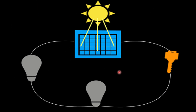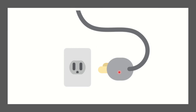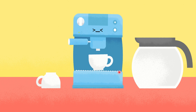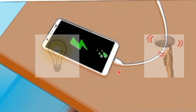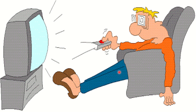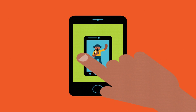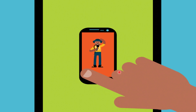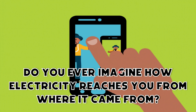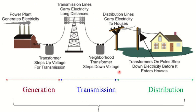Electrical energy is produced from various sources. Electricity is vital to mankind, especially in this modern age. Industries use it to make different products that are beneficial to man. We also enjoy its benefits in our homes through our electrical appliances, gadgets, lights, alarm systems, and others. Electricity has been an integral part of our lives since it was discovered. Do you ever imagine how electricity reaches you from where it came from? To provide electrical energy, it consists of three processes: generation, transmission, and distribution.